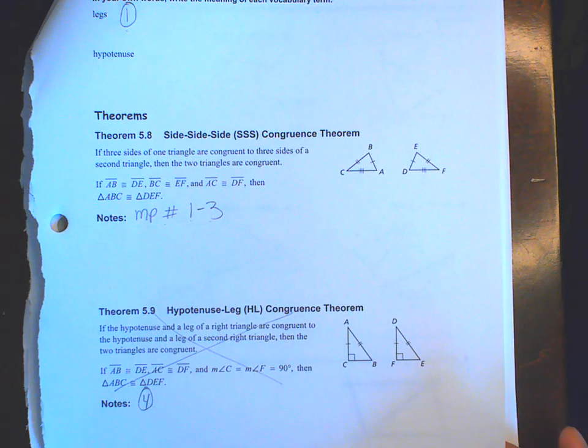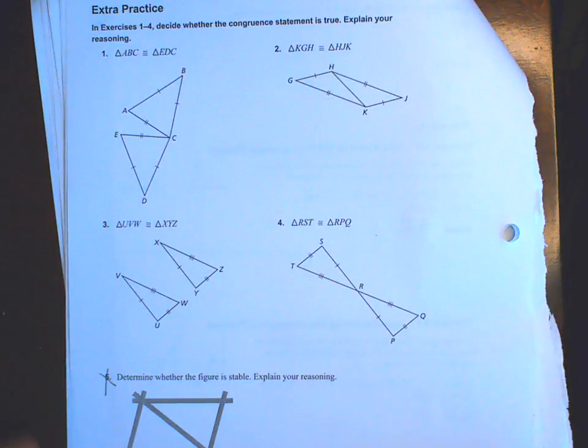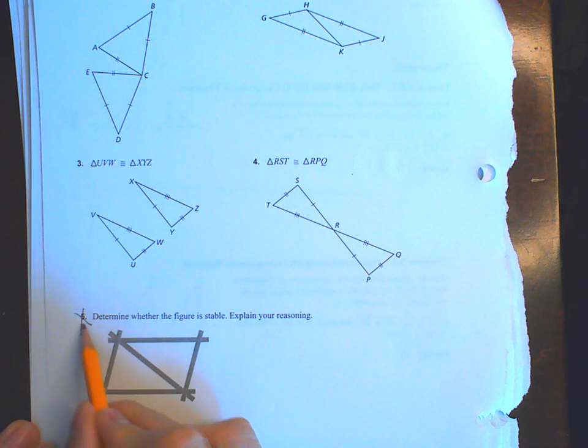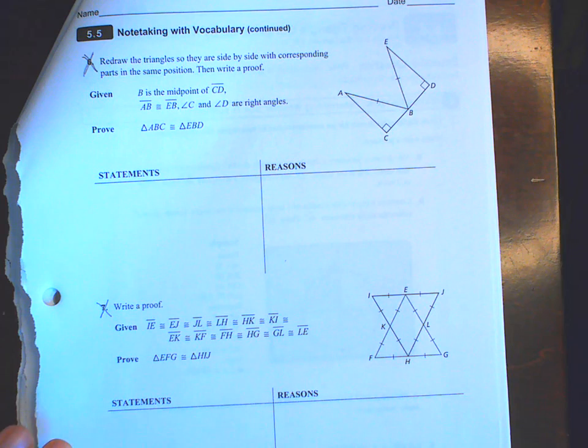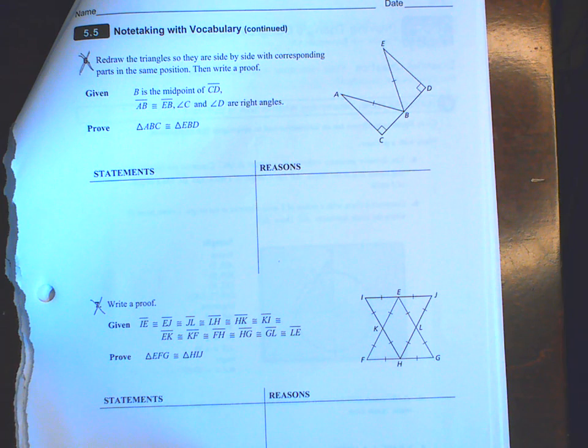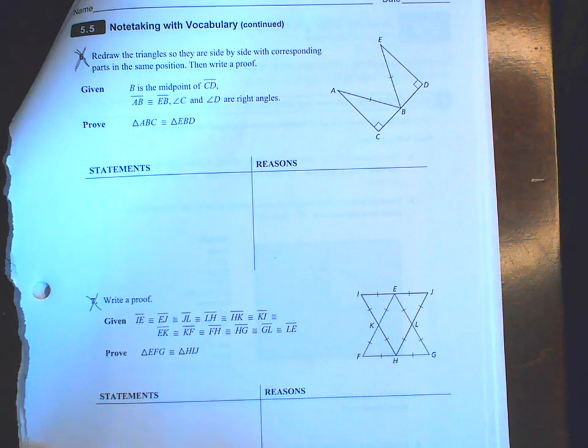Please turn to page 146 of your extra practice and cross off problem number five and problems number six and seven. This is due to distance learning. If we go back to in-person, or if you're seeing this video and we are no longer in distance learning, you are responsible for doing problems six and seven. Today is November 14, 2020 and we are in distance learning, so you will not be doing six and seven.